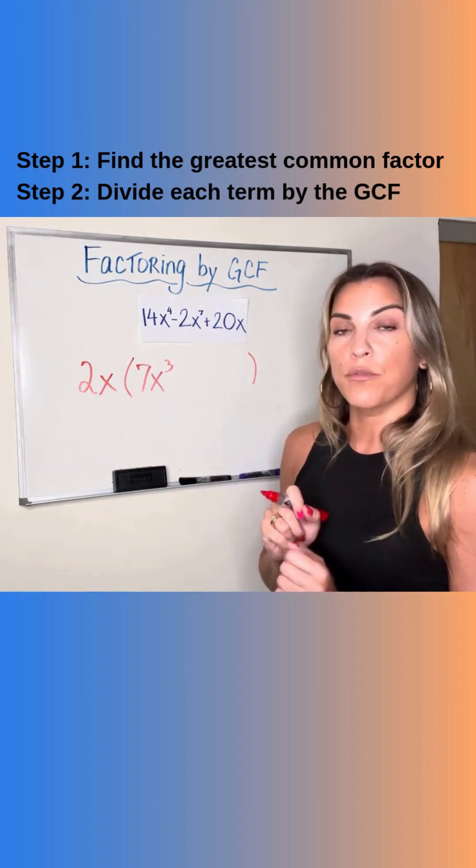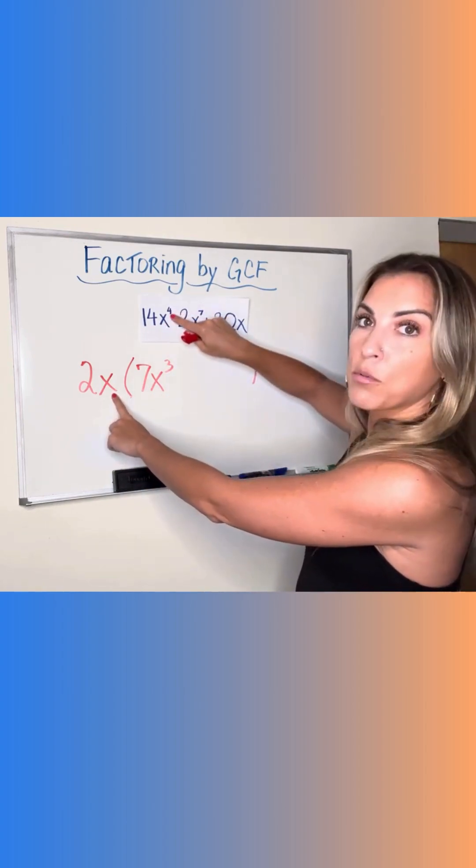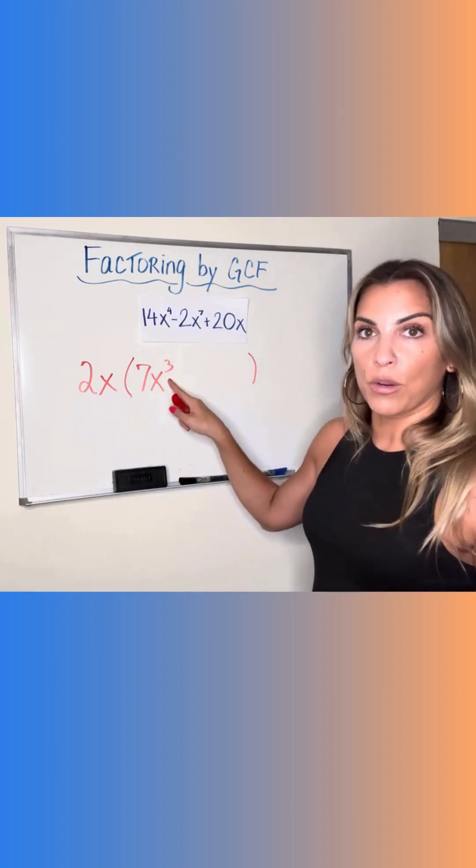One more time, those division rules for dividing with the same base. Same base, keep the base, subtract the exponents. 4 minus invisible 1 is a 3, right?